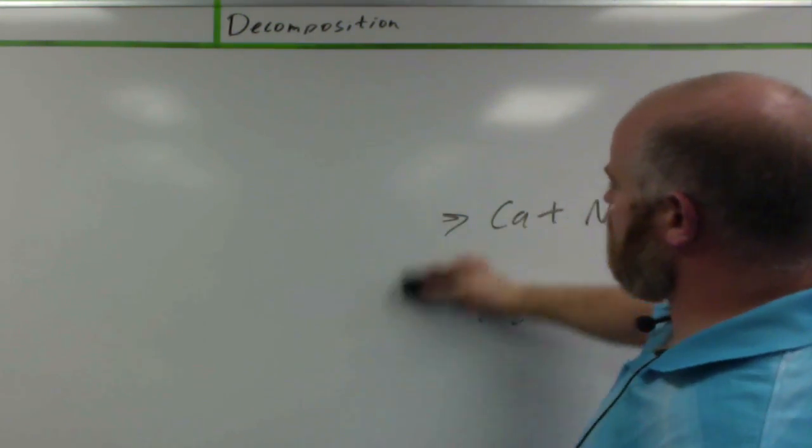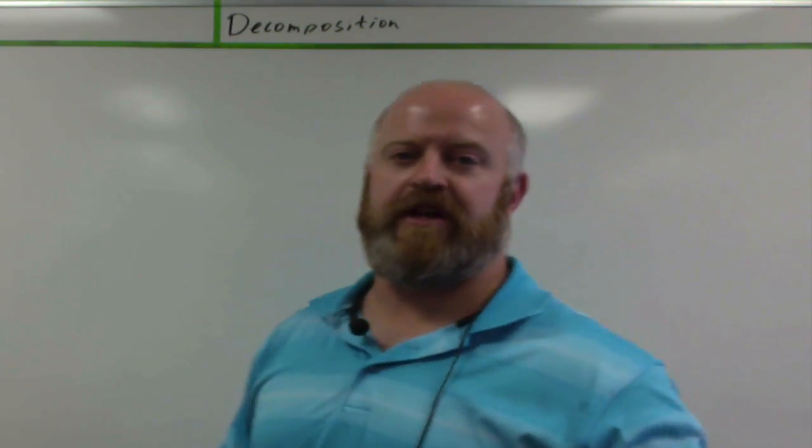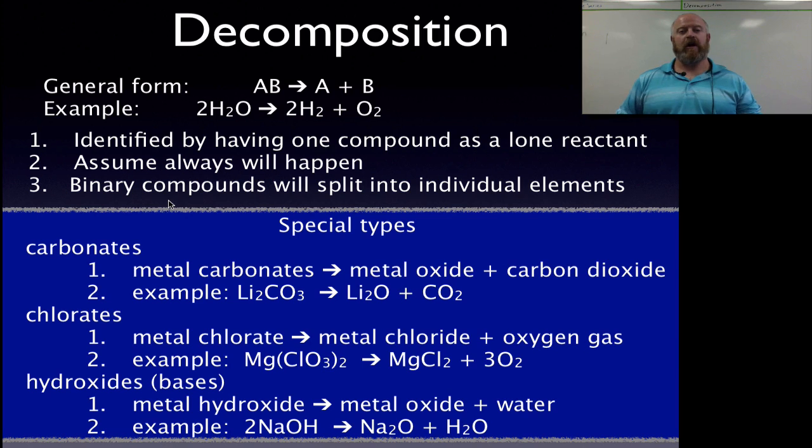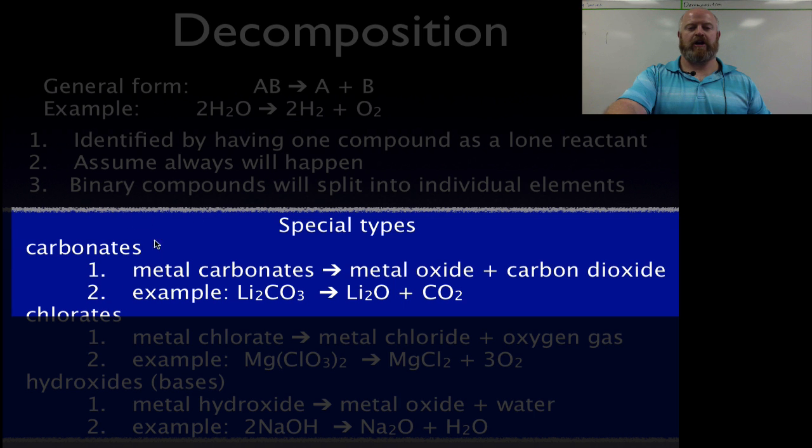However, decomposition does have three special cases that we want to deal with. There are others, there are more complex ones, because decomposition is a very broad type of reaction, where basically anything you decompose or break down is considered decomposition. But we want to focus on three special cases for our study in this unit. We're going to look at carbonates, chlorates, and hydroxides. So we're looking at three of these polyatomic ions as they break down. We're not going to worry about nitrates or sulfates or phosphates, because how they break down is more complex.